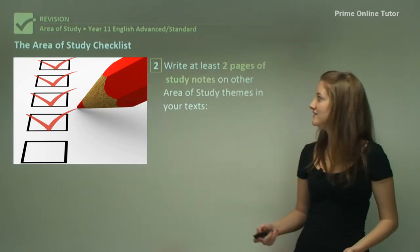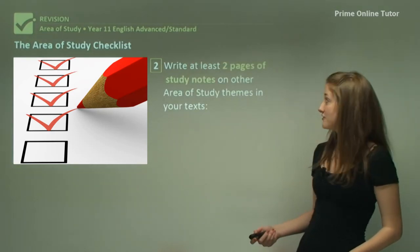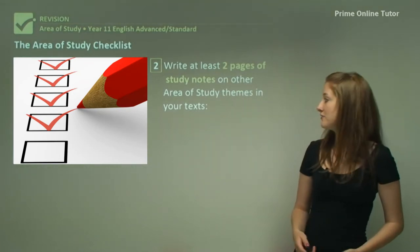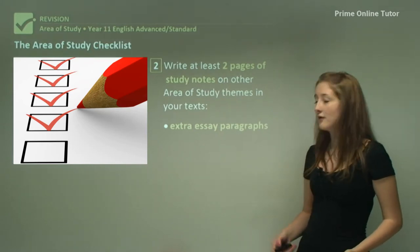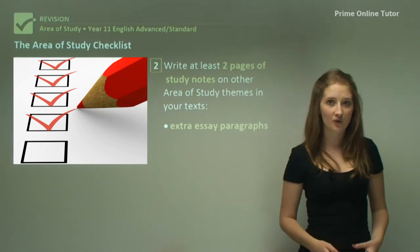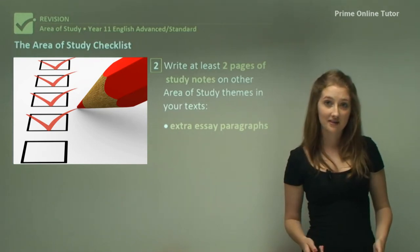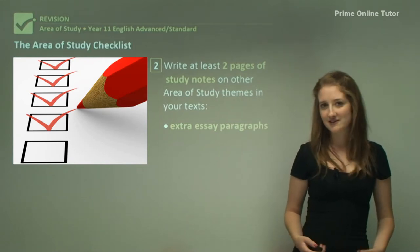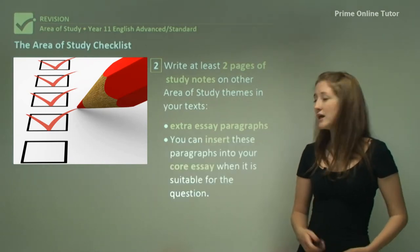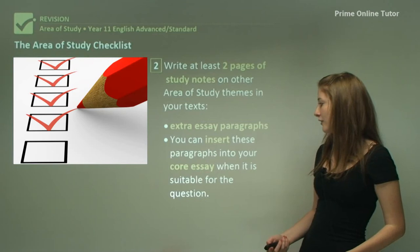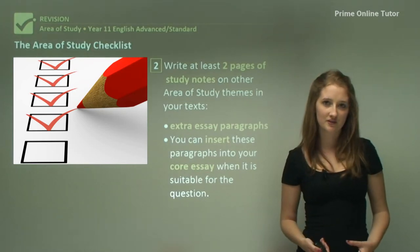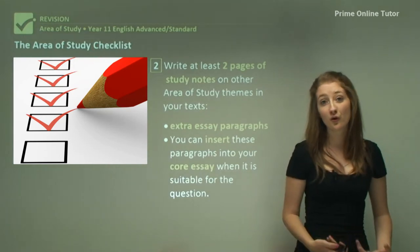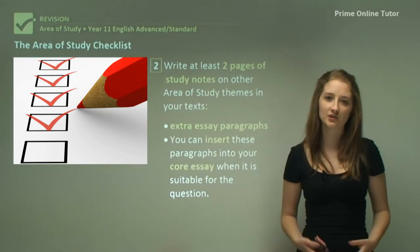The second element of this checklist is to write at least two pages of study notes on other area of study themes in your texts. This means that you write extra essay paragraphs which you can then add to your core essay. So while you've got your one main essay, these extra ideas give you flexibility when you write an essay at a later date. You can insert these paragraphs into your core essay whenever it's suitable for the question, reducing your workload later and making sure you've recorded all your ideas while they're still fresh in your mind at the end of term.